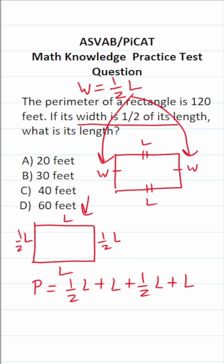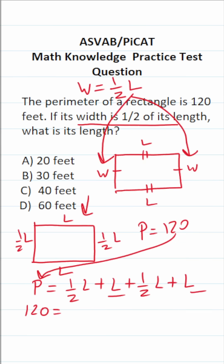We know according to the problem that the perimeter is 120 feet, so we can plug that in. This becomes 120 equals — L plus L is 2L, and one half L plus one half L is 1L — so this simplifies to 3L. We can now solve for L by dividing both sides of the equation by three.